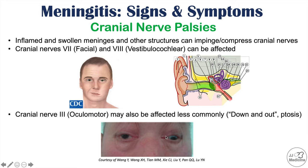If there is palsy of cranial nerve 3 but the other cranial nerves controlling eye movement are not affected, the unaffected cranial nerves will out-compete cranial nerve 3. Ptosis — a drooping eyelid — can also occur with cranial nerve 3 palsy, or oculomotor nerve palsy. These are some other signs and symptoms that can occur in meningitis.